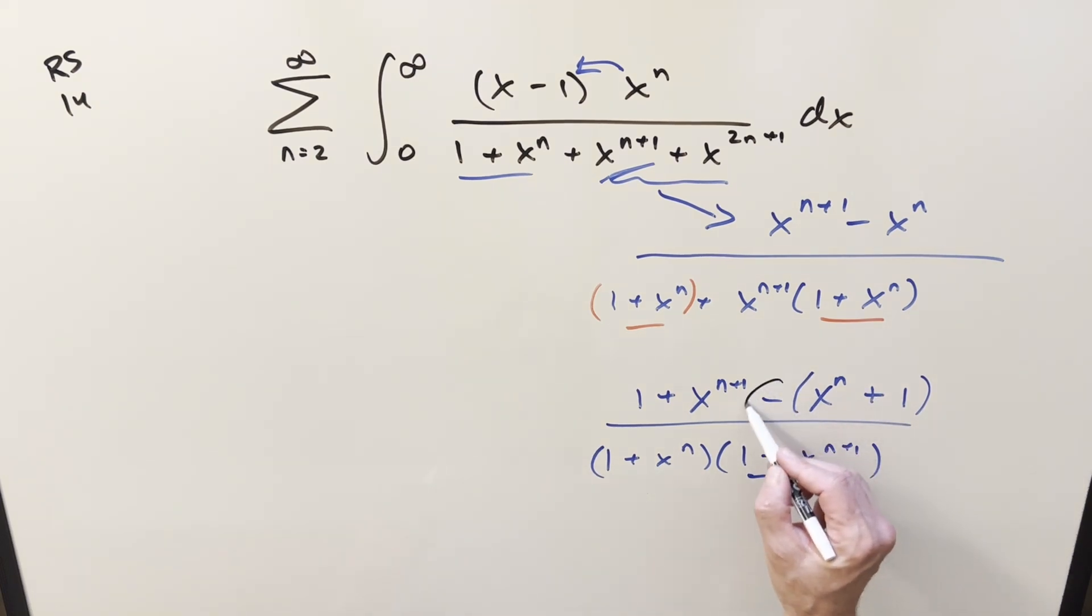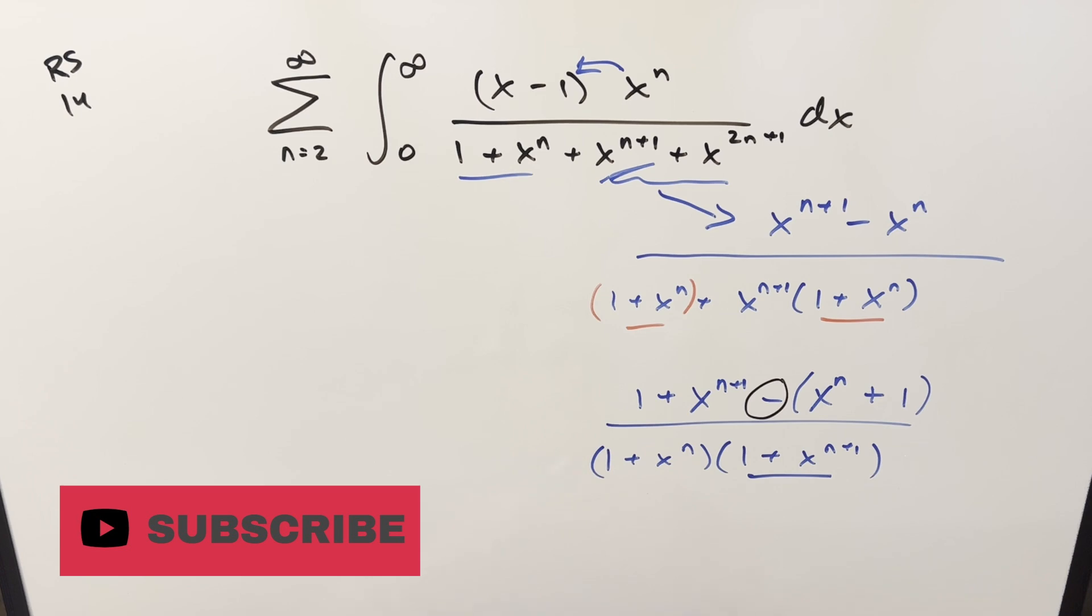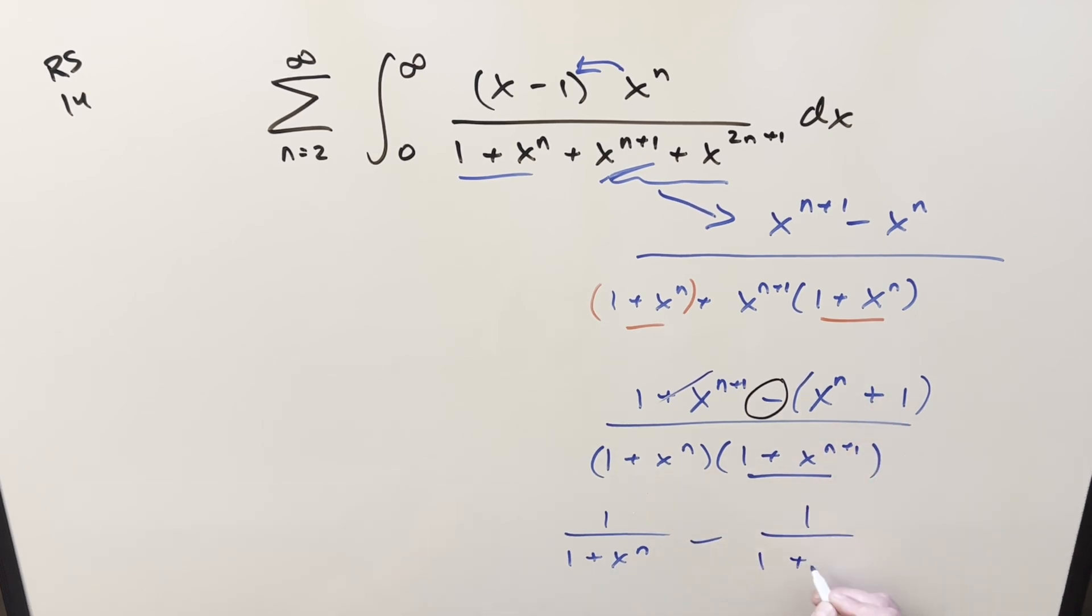So then if we split up this fraction on the minus sign, what's going to happen is with the first one, everything in the numerator is going to cancel out. So the first fraction is going to be just 1 over 1 plus x to the n because we're canceling this piece. And then in this one, this is going to cancel here. We're going to end up with 1 over 1 plus x to the n plus 1. But now we've got a very different looking expression.